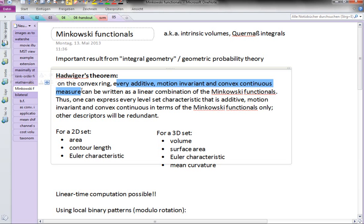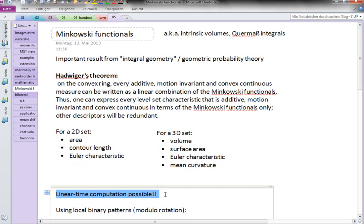Now, I found very interesting that linear computation time of these entities is possible. It seems obvious for area, maybe kind of obvious for contour length, but for Euler characteristic I find it quite stunning.